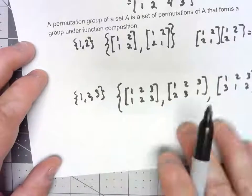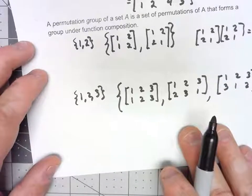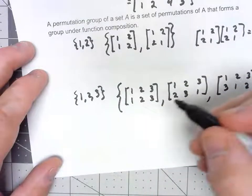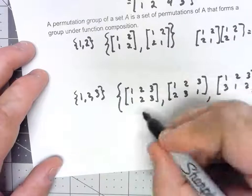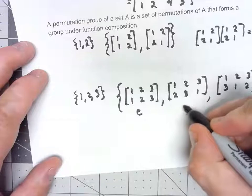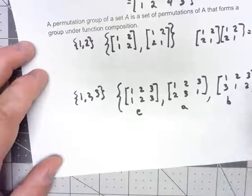This would be another permutation group. Let's go ahead and kind of verify some of this. Just for certain purposes of doing this, we'll call this the identity, we'll call this A, and we'll call this B. And let's go ahead and try and make a Cayley table for this.